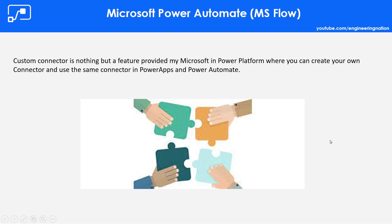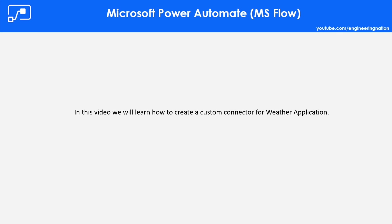As per the definition, a custom connector is a feature provided by Microsoft in the Power Platform where you can create your own connector and use it in Power Apps and Power Automate. There are a lot of connectors already created by Microsoft, but some connectors may cover personal APIs not created by Microsoft. Here you have the option to create your own custom connector, and in this video we will learn how to create one for a weather application.